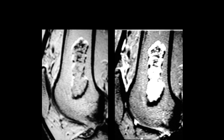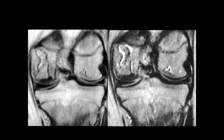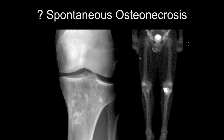Looking at this lesion — could be an enchondroma versus this other pattern. This is probably from the 1980s, showing an enchondroma versus a different pattern. This other pattern looks more like an infarct or AVN. This was a patient with lupus who had it in both femoral condyles. Here's another patient with acute onset knee pain — an older individual.